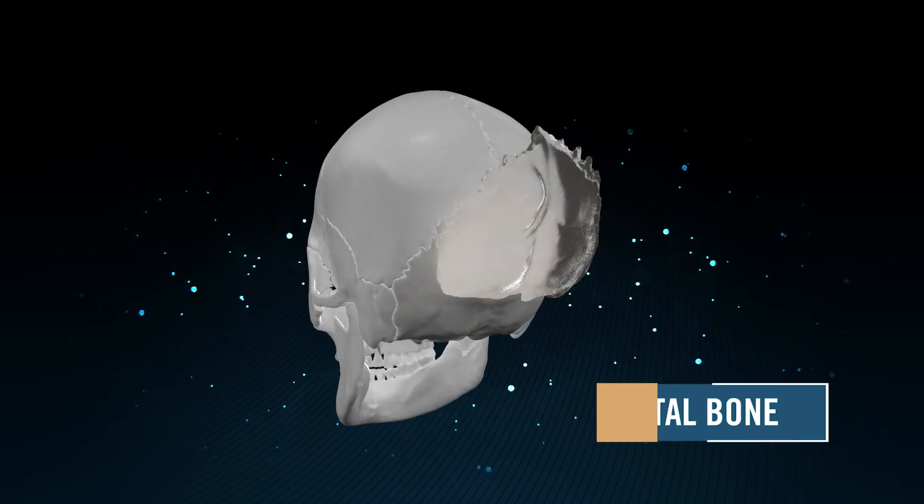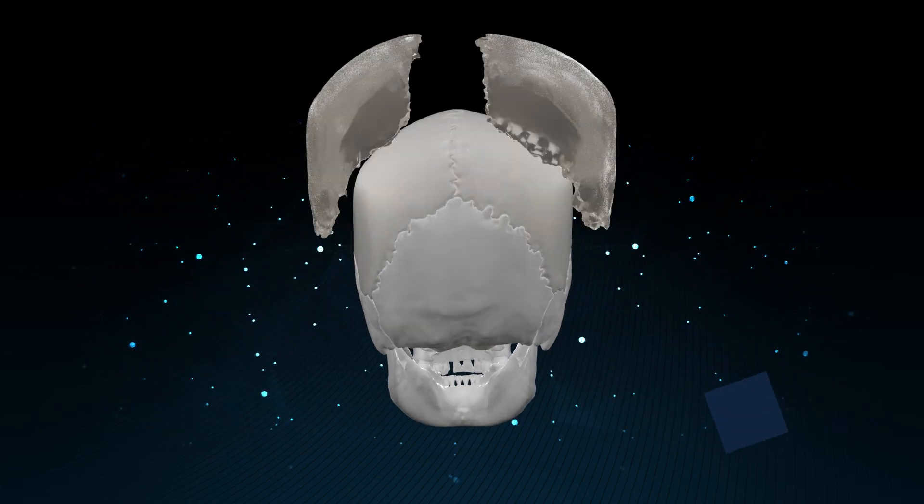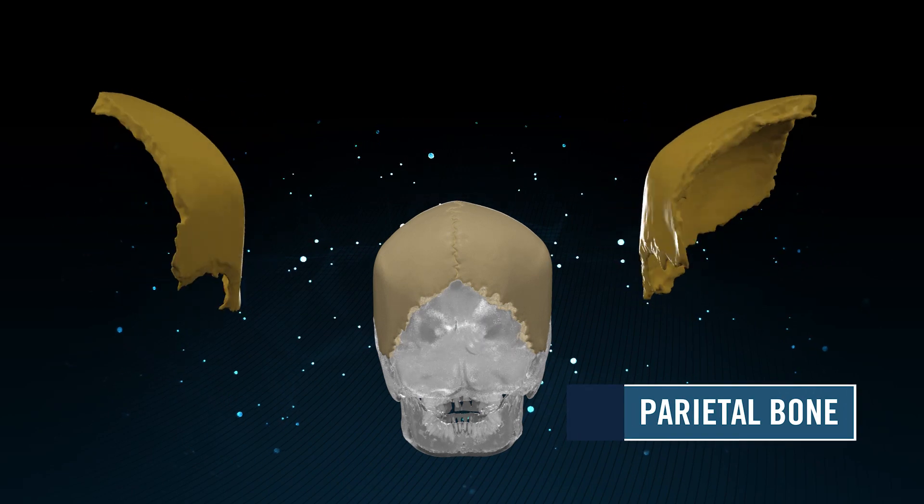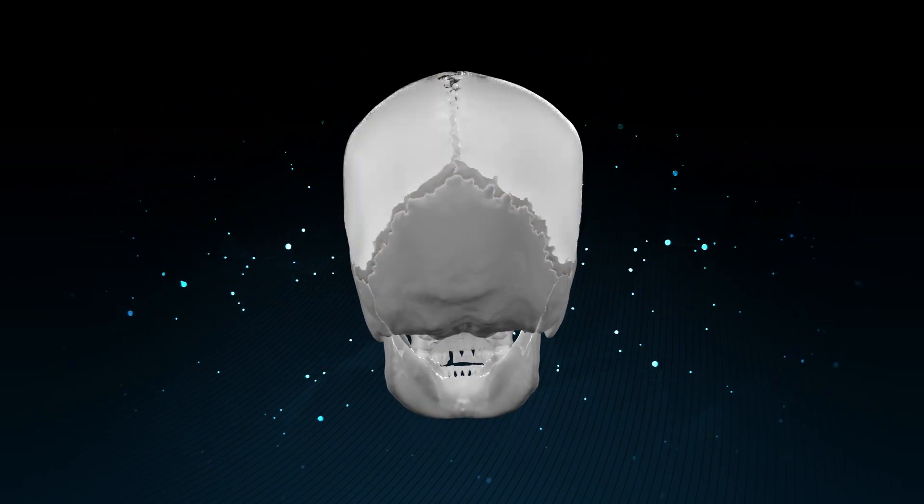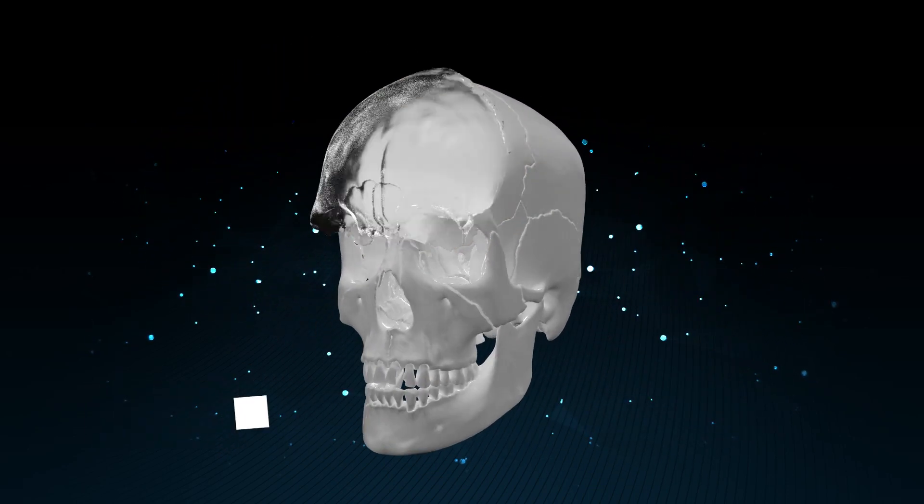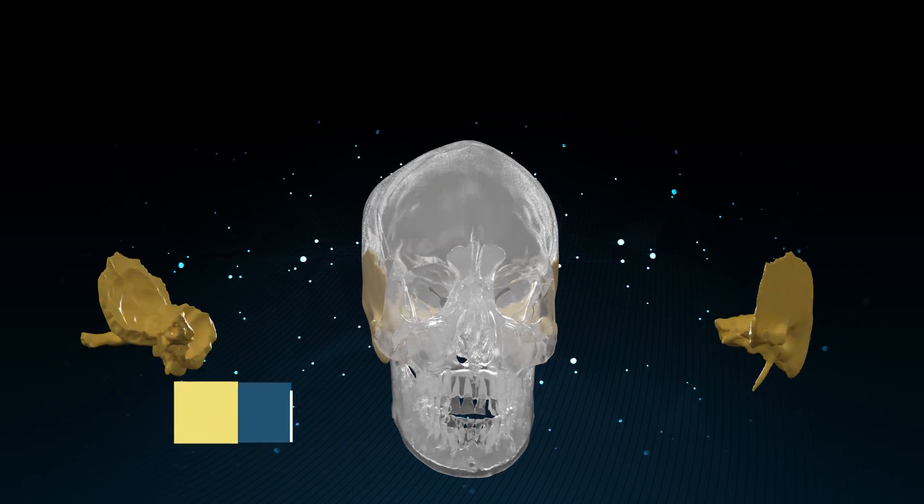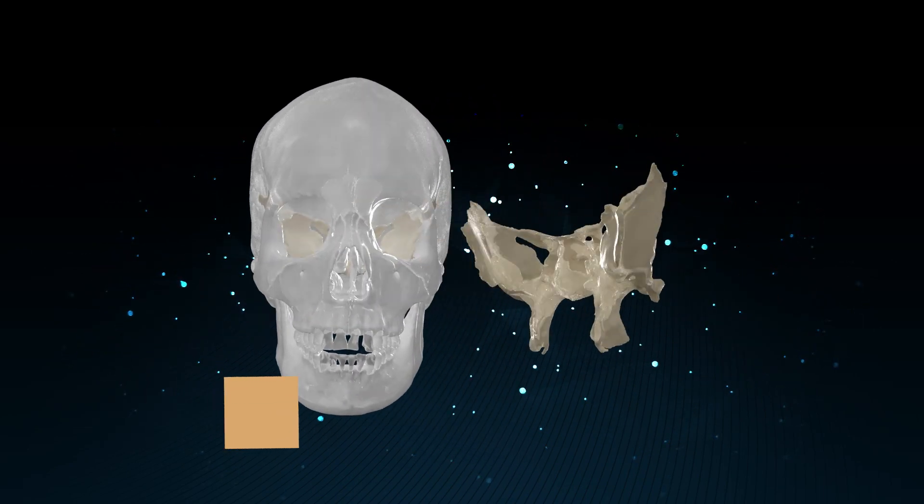The eight cranial bones are: occipital bone, parietal bone, frontal bone, temporal bone, sphenoid bone, and ethmoid bone.